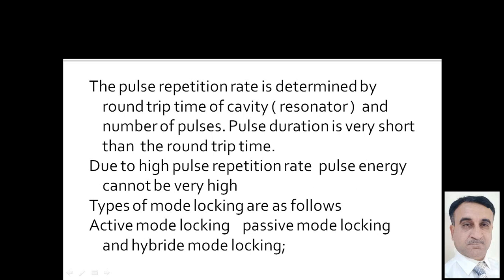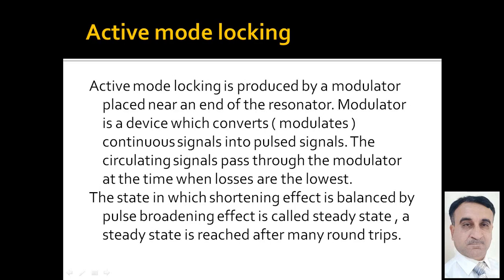There are three types of mode-locking: active mode-locking, passive mode-locking, and hybrid mode-locking. In active mode-locking, mode-locking is produced by a modulator placed near an end of the resonator. A modulator is a device which converts or modulates continuous signals into pulse signals. The circulating signals pass through the modulator at the time when losses are lowest, converting the continuous signal into a pulse signal.